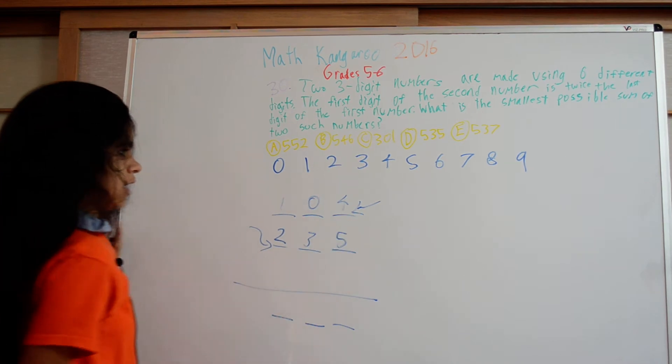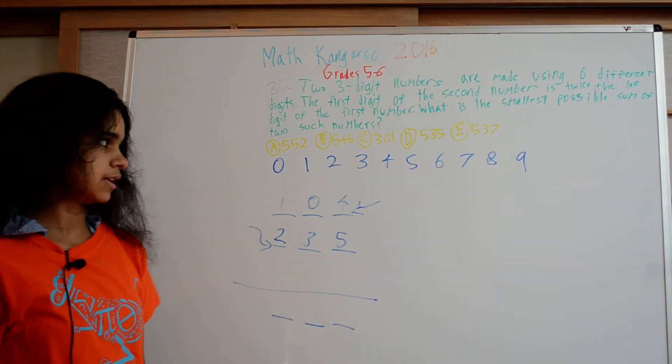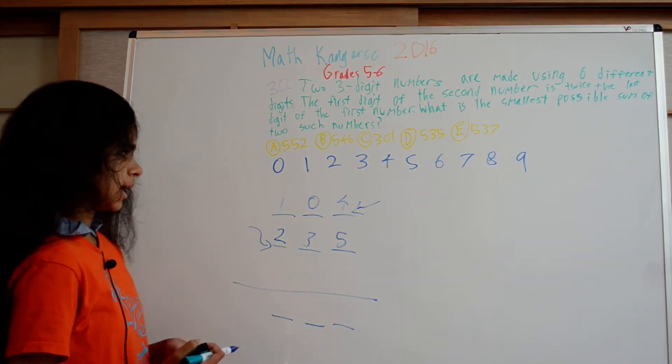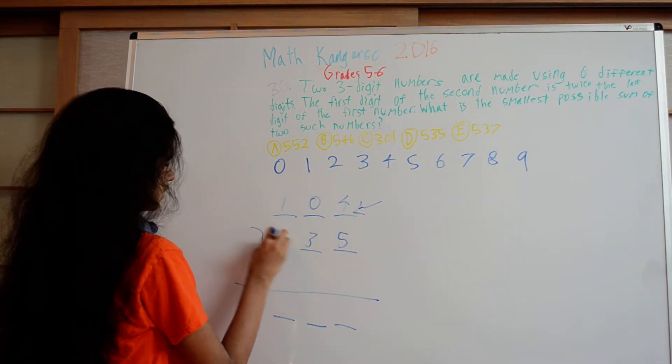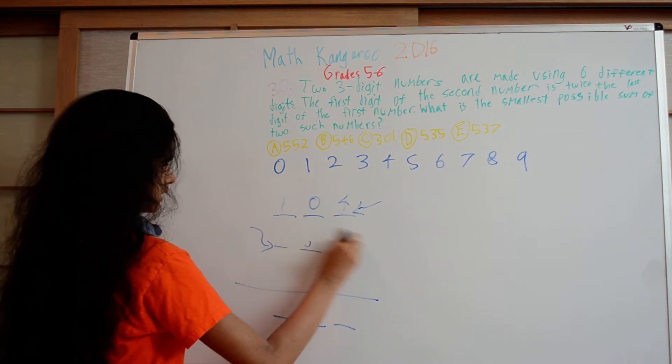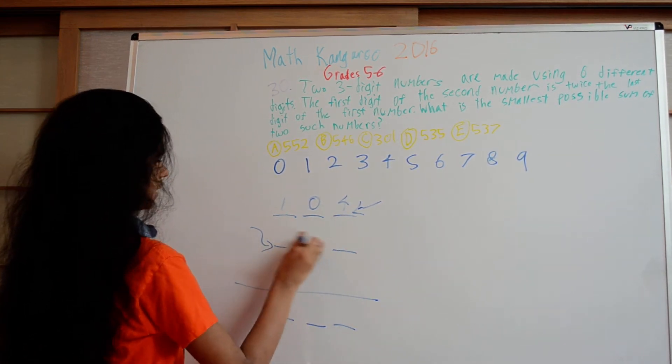And then four and five would give us 339. But we can't do that because that's not going to satisfy our condition. Two is not two times four, it's actually the other way around. So we can't use these numbers.